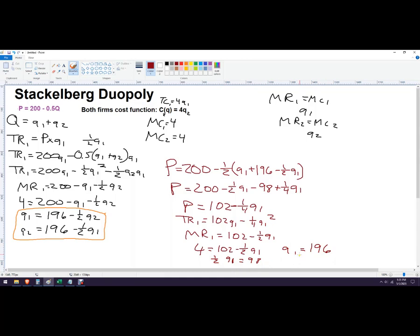Next thing, we just need to plug this into firm two's reaction function to see how they react. That's why it works. So it's 196 minus one half, 196. See a lot of coincidental numbers in these things because they turn out kind of smoothly. So that should be 98. So firm two should produce 98 units.